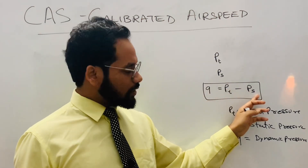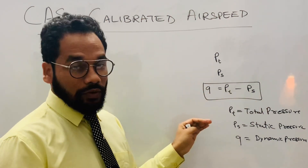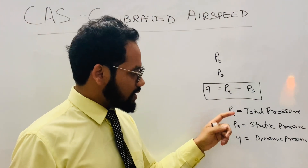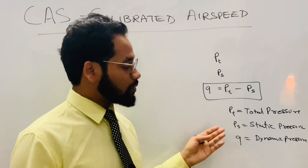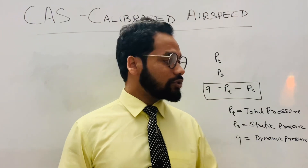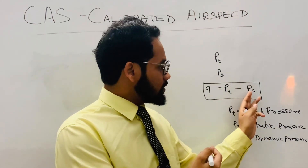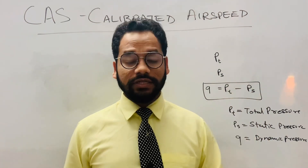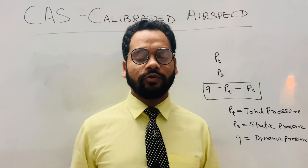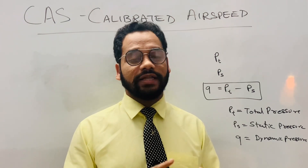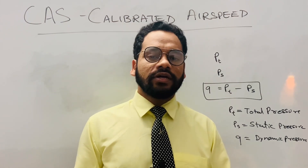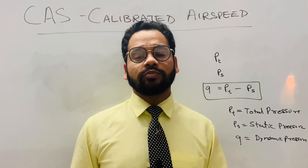Now we will go in more depth — how is total pressure and static pressure measured? These pressures are measured generally by two types of probes: one is called the PTOT probe, and the other is called the static probe or static vent.